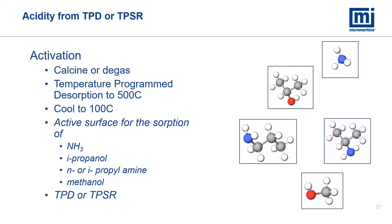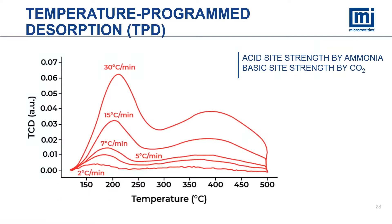Another method used on the AutoChem is measuring the acidity of the catalyst by performing a temperature program desorption or surface reaction. Activation can be performed in situ with a dedicated preparation pathway. A probe is selected based on the type of acid sites. Depending on the probe used, it may be necessary to use a mass spec to aid with data reduction. For total acid sites, ammonia can be used, and for basic sites, carbon dioxide can be used as a probe. By changing the linear ramp rates, calculations of heats of desorption can also be performed.